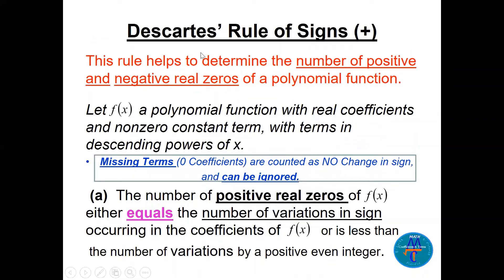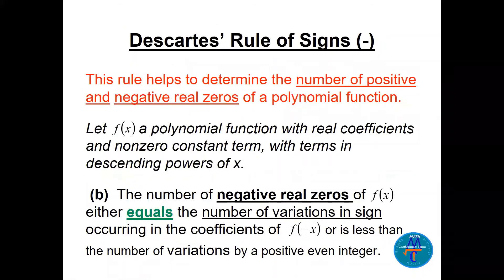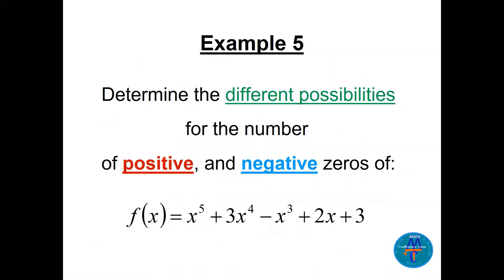Here is the formal statement of Descartes' Rule of Signs. Missing terms (zero coefficients) are counted as no change. The number of positive real zeros equals the number of sign variations in f(x), or less than that by a positive even integer. The number of negative real zeros equals the number of sign variations in f(−x).